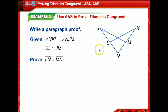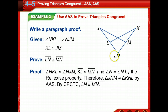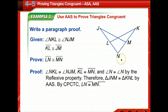They want us to write a paragraph proof. We're given that angle NKL is congruent to angle NJM, and that KL is congruent to JM. We're to prove that LN is congruent to MN. Angle N is congruent to angle N — I'd prefer to name it angle JNK congruent to angle KNJ. By the reflexive property, therefore triangle JNM is congruent to triangle KNL by angle-angle-side. And by corresponding parts of congruent triangles are congruent, LN is congruent to MN.